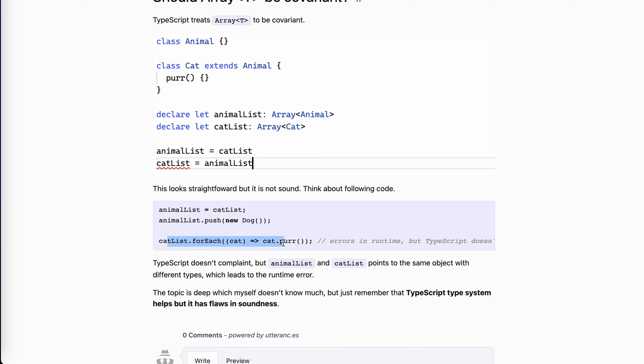Yeah, we accidentally have two references to the same object, but with different types. The animalList is list of animals, but catList is a list of cat, but they both point to the same array. Now, yeah. For catList, we will call something error, right? It will cause some trouble.